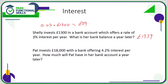Basically her bank balance will have increased by 3%. Another way of doing the calculation, instead of working out 3% and adding it on, is to multiply by 1.03, because this is our multiplier for a 3% increase. That would take us directly to the £1,339.